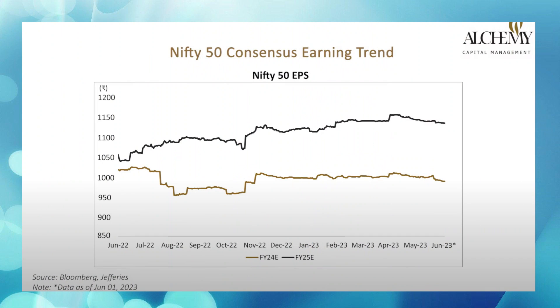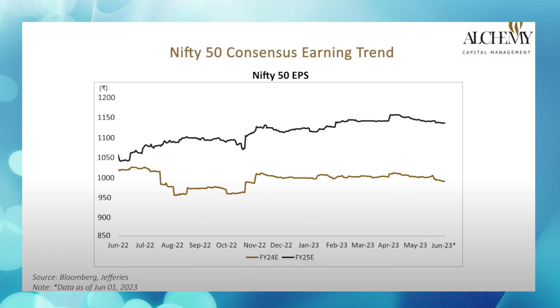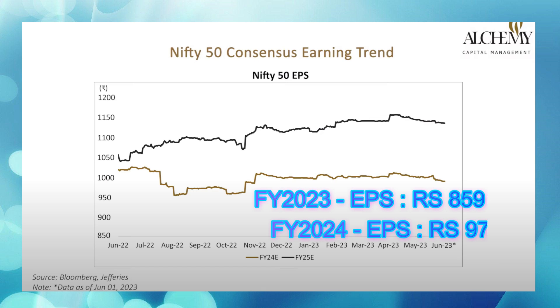Calculating Nifty's forward earnings is really difficult due to complexity, but large investment firms like Bloomberg and Jefferies calculate and release those forward earnings. This chart shows Nifty's forward earnings for FY2024 and FY2025 released at various points over the past year — compiled by Alchemy Capital. According to those estimates, the current 859 earnings per share is expected to increase to approximately 975 in FY2024.